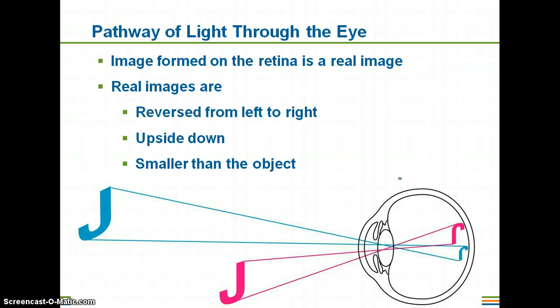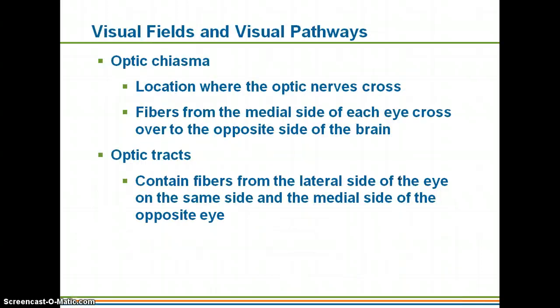What's amazing is that our brain — in the area of the cortex in the occipital lobe where we process vision — automatically corrects for this. It knows that the image being projected on the retina is upside down, reversed, and smaller, so when you process it, what you are seeing will appear to be upright, the correct size and proportion, and in the correct direction.